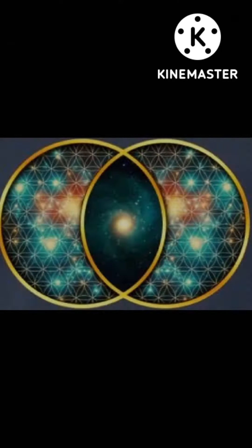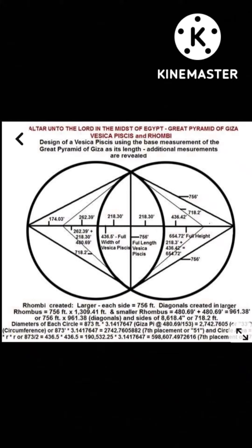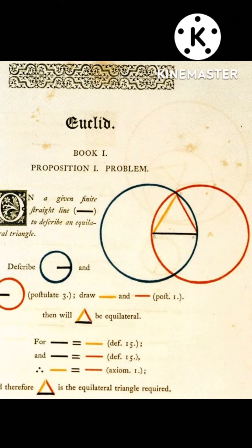In geometry and in religious symbology, you have what is known as the Vesica Piscis. The Vesica Piscis is when two circumferences of a circle merge together to a point where it forms an almond-shaped space. In geometry, that space is called a lens. In other tongues, a mandala, which means almond.